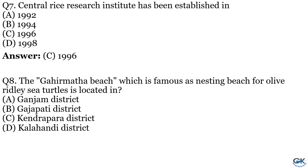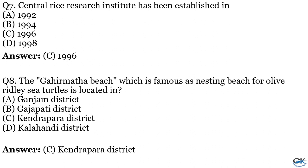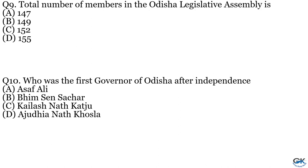Question No. 8: The Gahirmatha beach, which is famous as a nesting beach for olive ridley sea turtles, is located in which district? Option A: Ganjam. Option B: Ganjapati. Option C: Kendrapada. Option D: Kalahandi. The answer is Option C, Kendrapada district. Question No. 9: Total number of members in Odisha Legislative Assembly is Option A: 147. Option B: 149. Option C: 152. Option D: 155. The answer is Option A, 147.